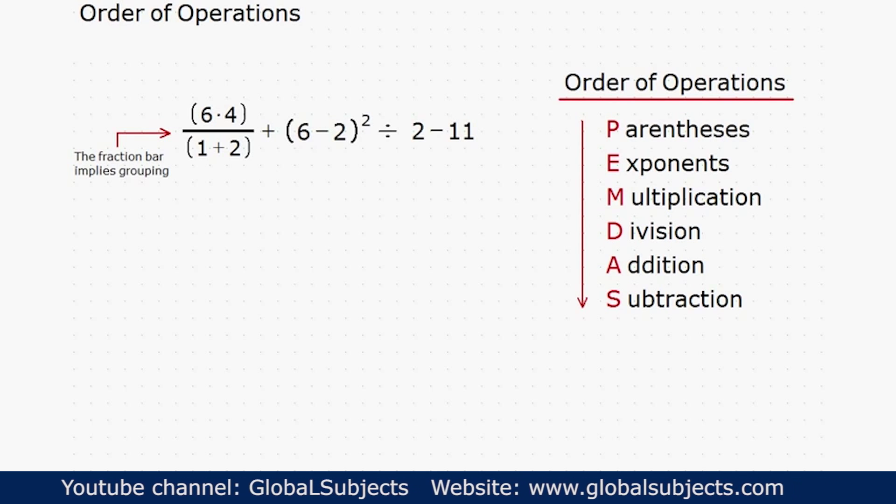Doing everything in the parentheses means that I'm going to replace the 6 times 4 with a 24, the 1 plus 2 with a 3, and the 6 minus 2 with a 4.